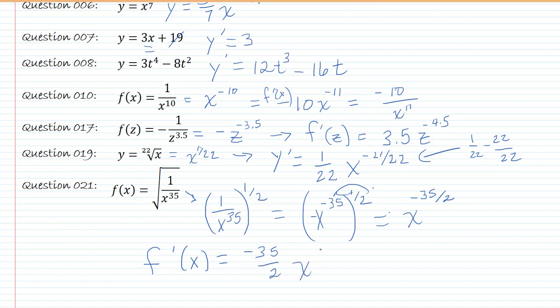So f prime of x would be bringing the negative 35 over 2 down, x to the negative 35 over 2 minus 1, so minus 2 over 2, and I get negative 37 over 2.